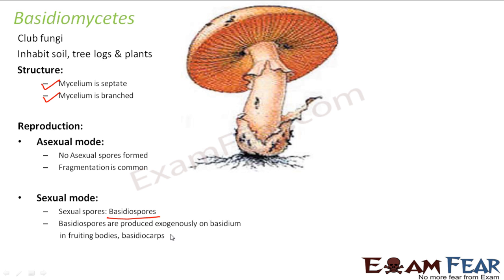In the sexual mode, sexual spores are produced and they are known as basidiospores. They are produced exogenously on basidium in fruiting bodies called basidiocarps. Just as ascomycetes had ascospores and ascocarps, here the sexual spores are basidiospores and the fruiting body is basidiocarp. The basidium is the swollen terminal part of the hyphae.